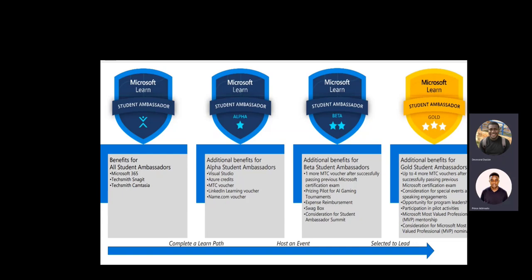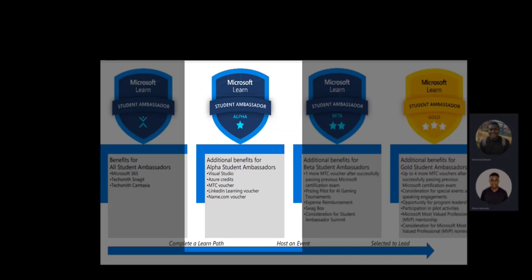After the application process, you complete the learning part, then move to the second milestone — the Alpha Student Ambassador level. The benefits at this stage include Visual Studio, Azure Credit, a Microsoft Technical Education Voucher, a LinkedIn Learning Voucher, and an AIM.com Voucher.